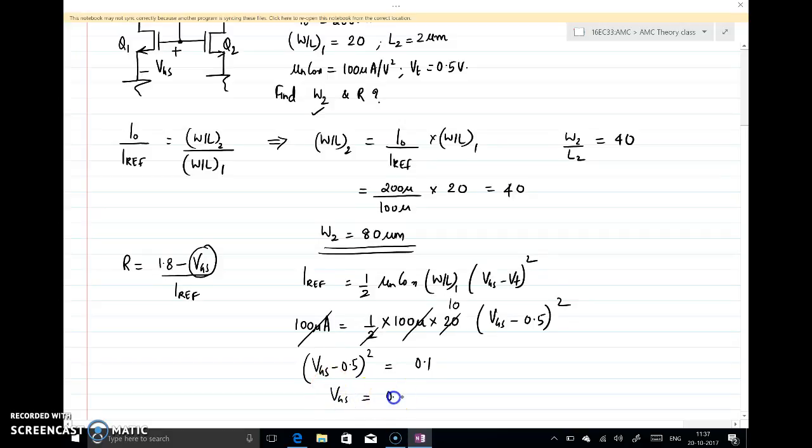Root - so Vgs is 0.816. We can find your R as 1.8 minus 0.816 divided by reference current Iref which is 100 microamps, so we will get it as 9.8 kΩ.